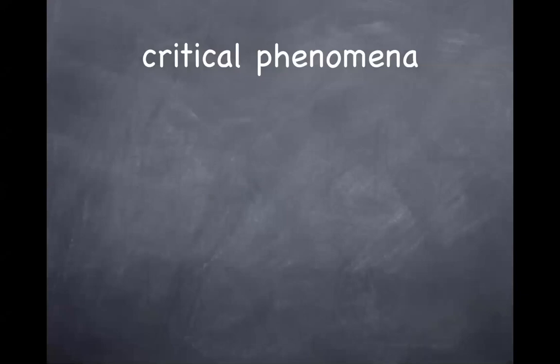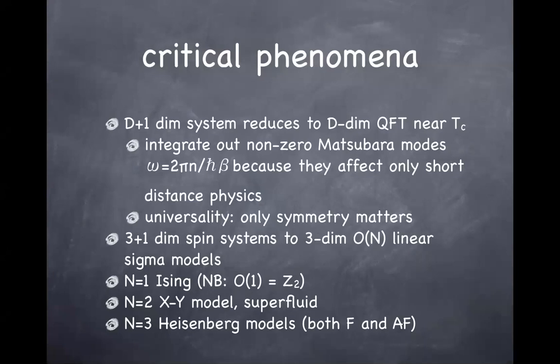So these systems are described by the same non-linear sigma model in the N=3 case, which should describe both ferromagnetic and antiferromagnetic systems.